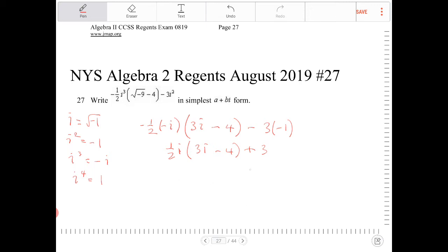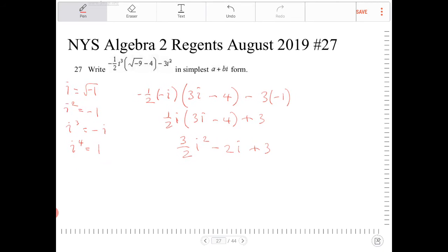And now I'm going to distribute the one-half i. So I have three halves i squared minus two i plus three. i squared is negative, so I have negative three halves minus two i plus three.